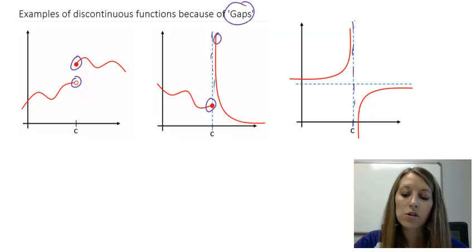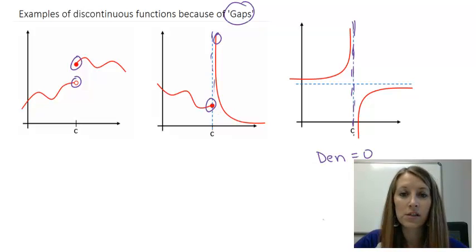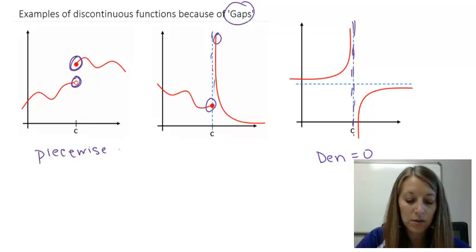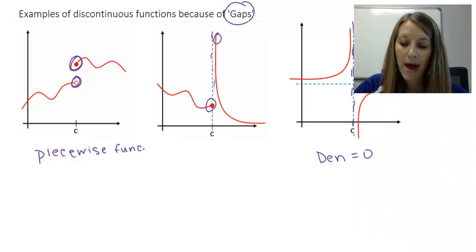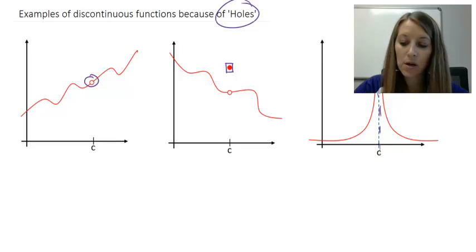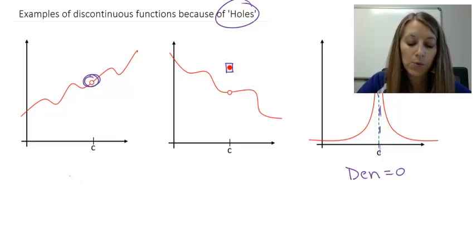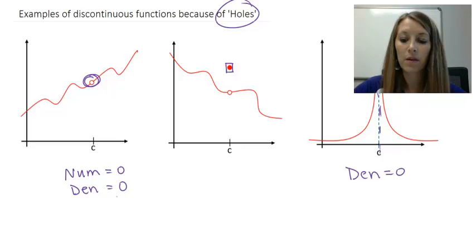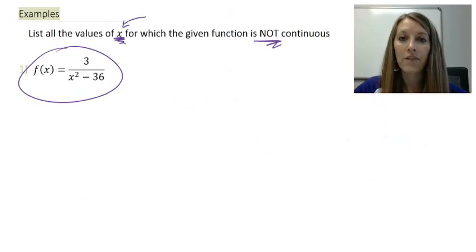What causes vertical asymptotes? That is when our denominator is equal to zero, which causes our function to be undefined. What causes us to have two separate pieces of the graph? That is because of a piecewise function. Vertical asymptotes are caused when our denominator is equal to zero, and holes in the graph occur when both the numerator and the denominator equal zero, because they end up canceling each other out. Thinking about all of these cases helps us decide where our graph is not continuous.